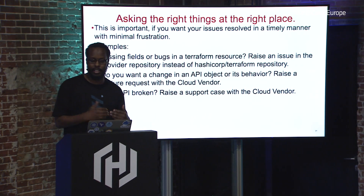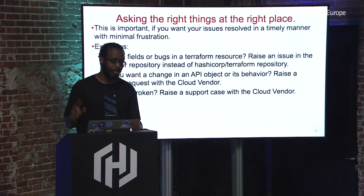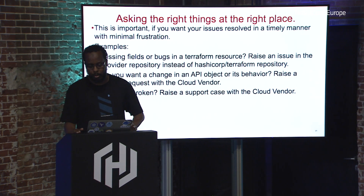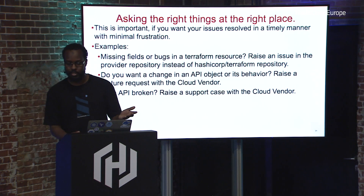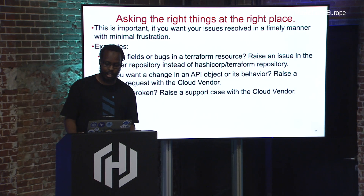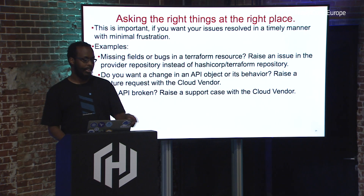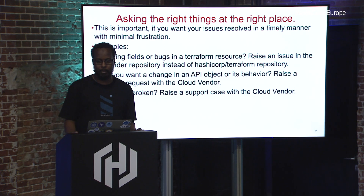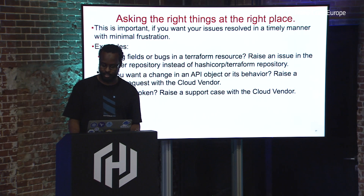When someone files a provider issue in the wrong repo, the Terraform core maintainers will say 'sorry, wrong place' and redirect the issue — that's an extra delay in getting help. We also get issues where people say 'the API is doing X, I think you should be doing Y,' but that's not the right question for the HashiCorp GitHub repositories because we're not responsible for the API. You need to go to the cloud vendor and request a feature change. Similarly, if there's a bug in the API, log a support ticket with the cloud vendor.